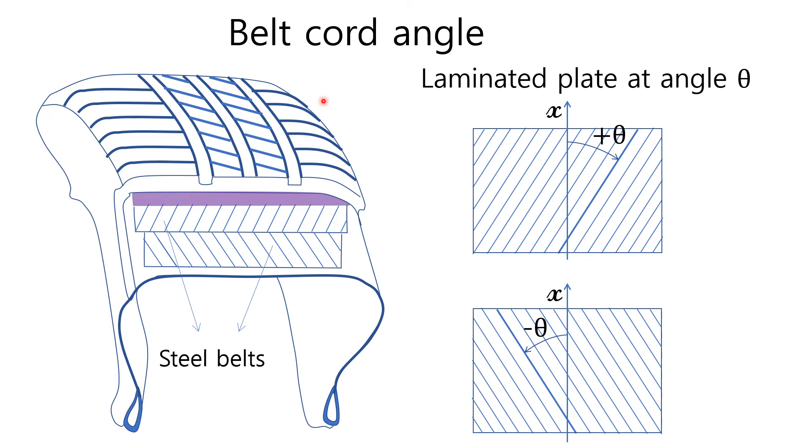The chord of steel belt has an angle with respect to longitudinal x-axis. The clockwise from the positive x-axis makes the positive angle, and the counterclockwise from the positive x-axis makes negative angle.